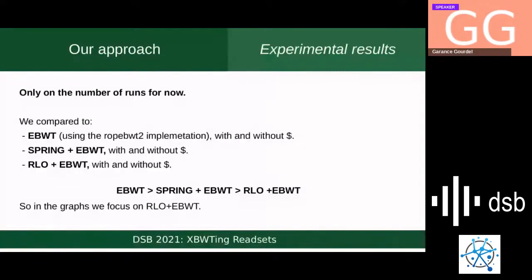For experiments, we only compare the number of runs and the compression. We compare to the EBWT using the ropebwt2 implementation, with and without dollar signs, since our approach has no dollar signs. We also compare to Spring + BWT2 (Spring reorders reads to reduce runs), and to RLO + EBWT (reverse lexicographic order). We found the number of runs was always greatest in EBWT, a little lower with Spring + EBWT, but much lower with RLO + EBWT. So in subsequent comparisons we always compare against RLO + EBWT.